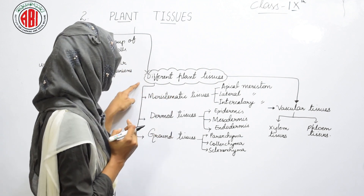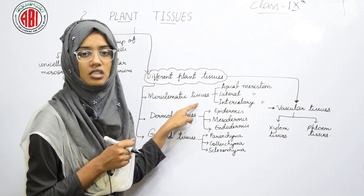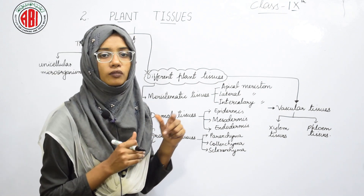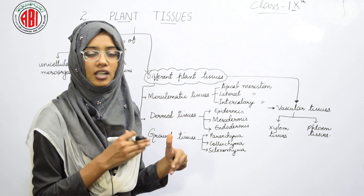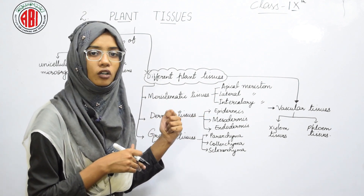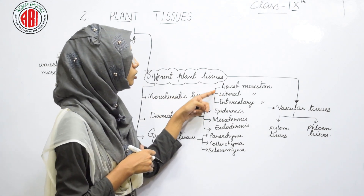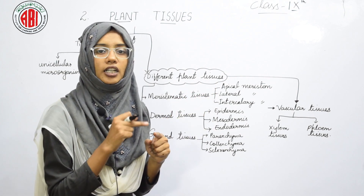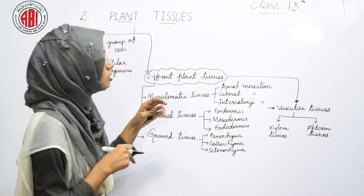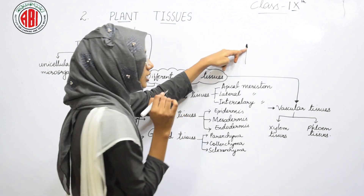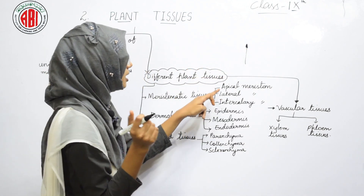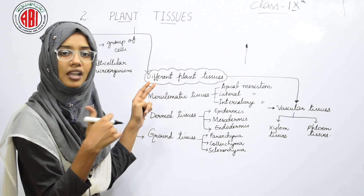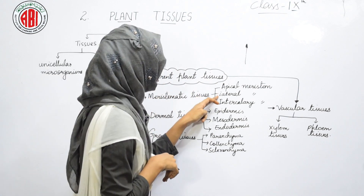The first major type is meristematic tissues — continuously dividing cells responsible for the growth of the plant. They are classified into three types: apical meristem, lateral meristem, and intercalary meristem. Apical meristematic tissues are found at the tip of the plant and are responsible for elongation, increasing the height of the plant. Lateral meristematic tissues are present at the sides and help in increasing the width or girth of the stem.